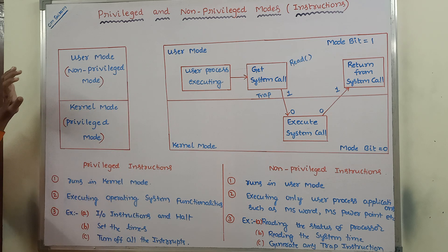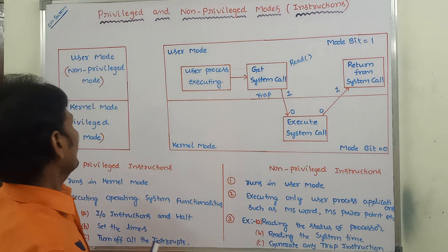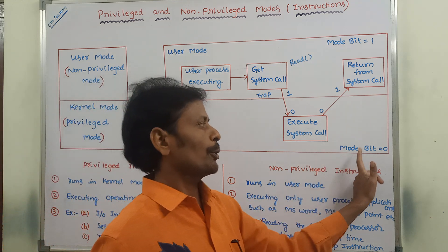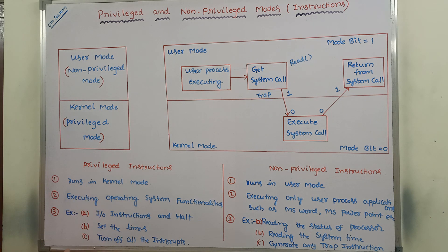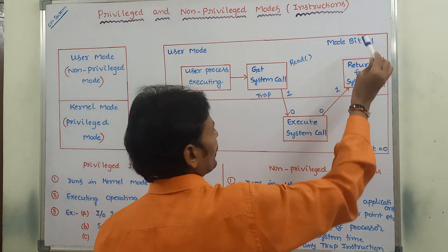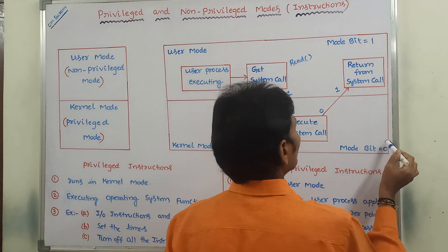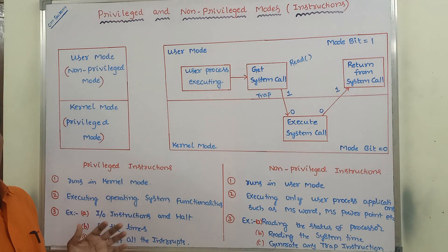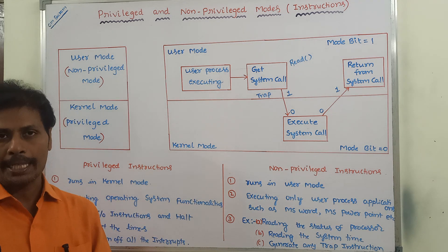In the user mode, the mode bit value is equal to 1. In the kernel mode, the mode bit value is equal to 0. Suppose we want to change from user mode to kernel mode, the mode bit value can be changed from 1 to 0. Suppose we want to change from kernel mode to user mode, the mode bit value can be changed from 0 to 1. The process of switching from one mode to another mode can also be called as context switching.